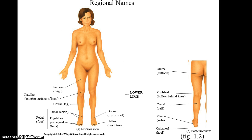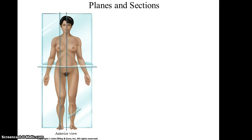You also have the hallux region for the great toe, so it has its own name. The heel is also known as the calcaneal region, which makes sense because that's similar to the name of the bone for that area. The buttock or gluteal region is also considered part of the lower limb, and you have the popliteal region for the hollow behind the knee.